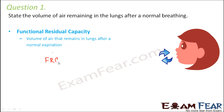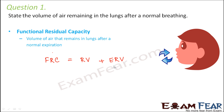How do we calculate this functional residual capacity? It is nothing but the residual volume — the volume which is left over in the lungs after a forceful breathing — plus the expiratory reserve volume, which is the volume you would have given out during a forceful respiration. So that means it is RV plus ERV.